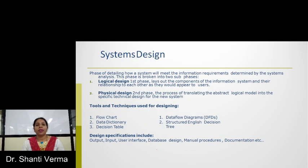In the system design phase, dealing with how the system will meet the information requirements determined by the system analysis, this phase is broken into two surfaces. First is a logical design, second is a physical design. A logical design lays out the components of the information system and their relationship to each other as they would appear to the users, while the physical design is the process of translating the abstract logical model into a specific technical design for a new system.